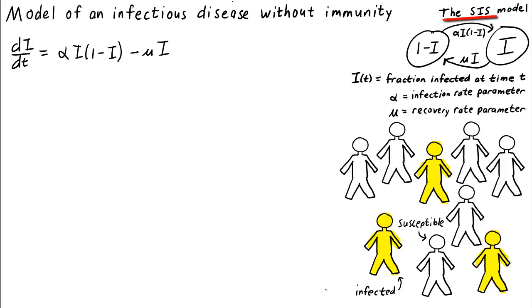The SIS model is a model that describes how an infectious disease can infect susceptible individuals when they come in contact with an infected individual, and how infected individuals recover and become susceptible once again.